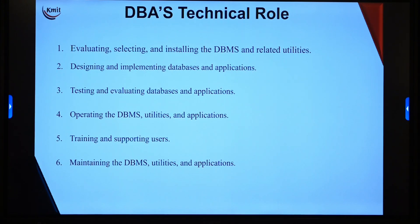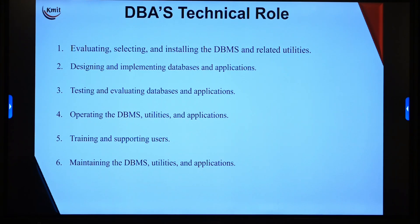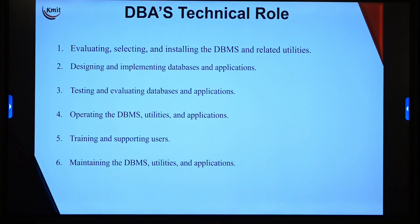The first technical function is evaluating, selecting, and installing the DBMS and related utilities. This involves zeroing down on which software to use and what supporting hardware is needed. The selection plan is based on the organization's needs and features like the data model, storage capacity, backup and recovery, concurrency control, performance, portability, cost, type of application, support requirements, number of simultaneous users, and the organization's budget. Keeping all these points in mind, the DBA must come out with the right software solution.